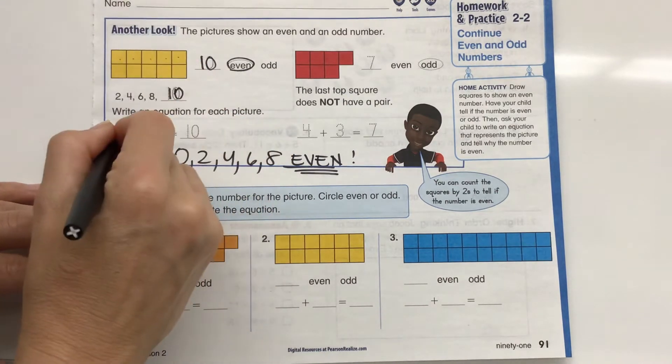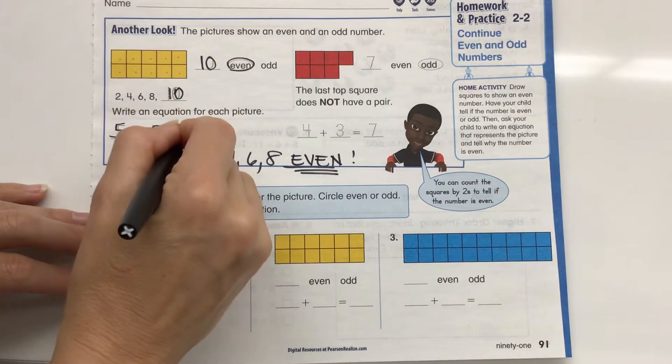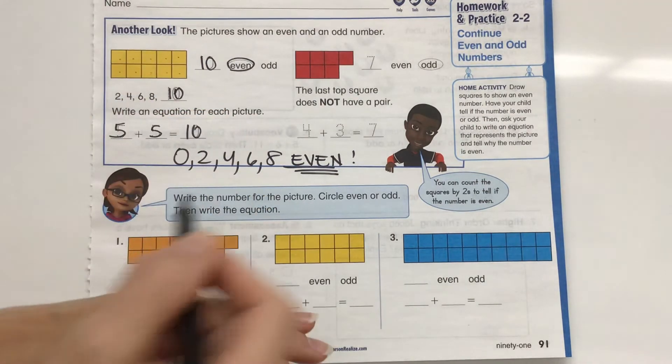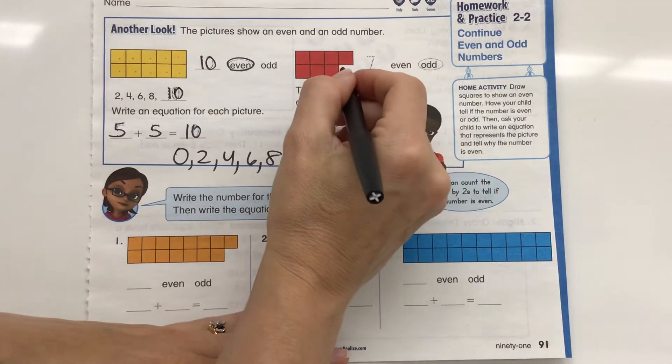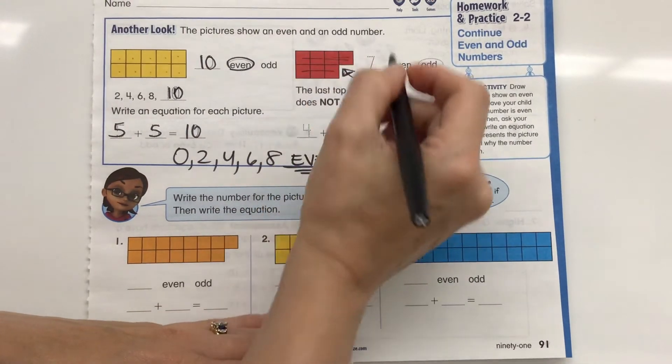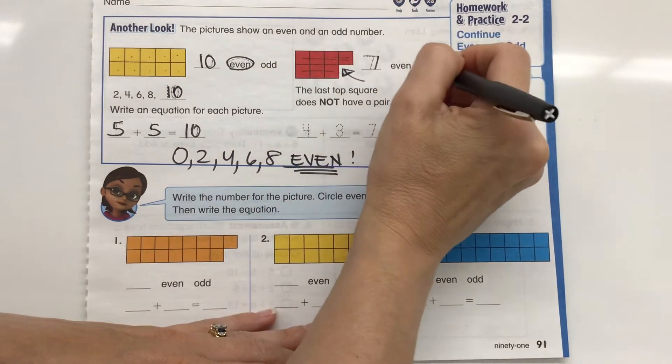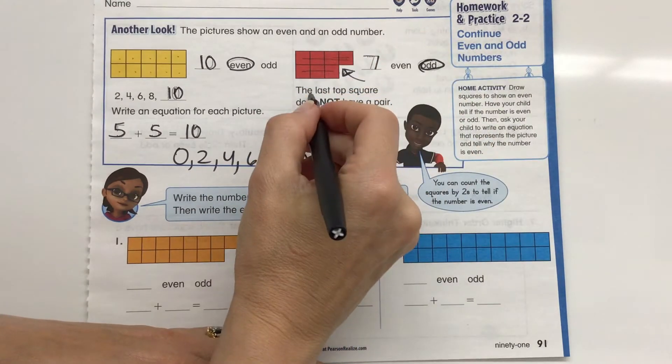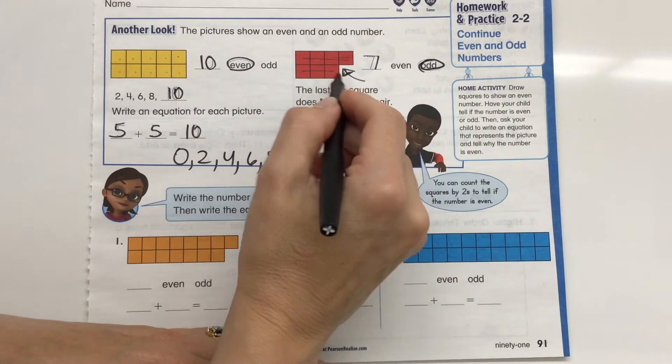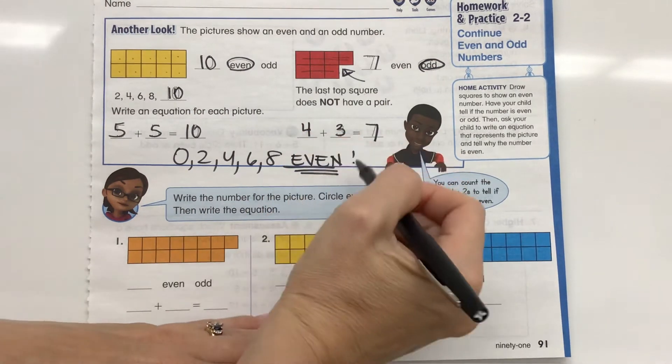1, 2, 3, 4, 5 plus 1, 2, 3, 4, 5 equals 10. Now let's take a look. I can tell just by looking at it we've got one missing here, so we don't have two even rows. There's 1, 2, 3, 4, 5, 6, 7. So 7 is an odd number. The last top square does not have a pair. So 4 plus 3 equals 7.